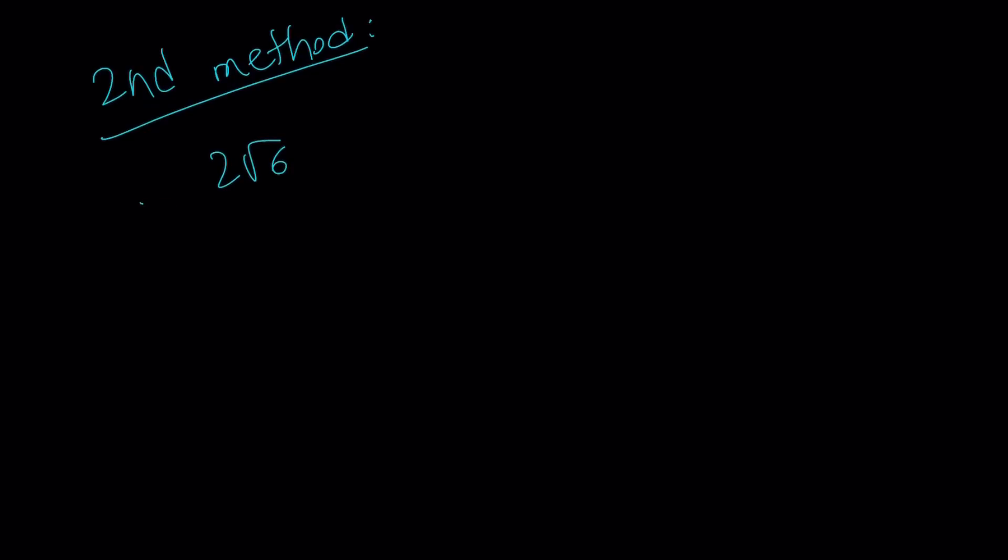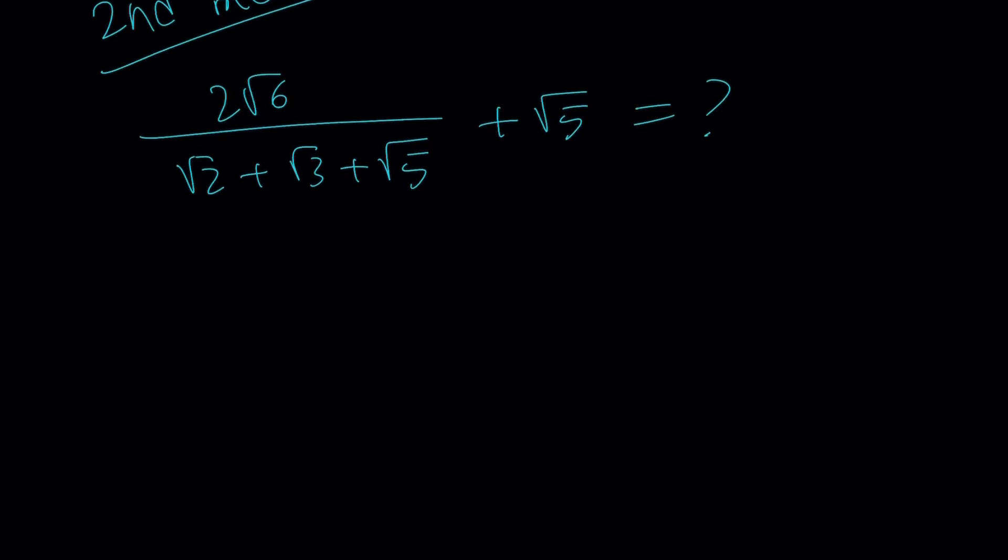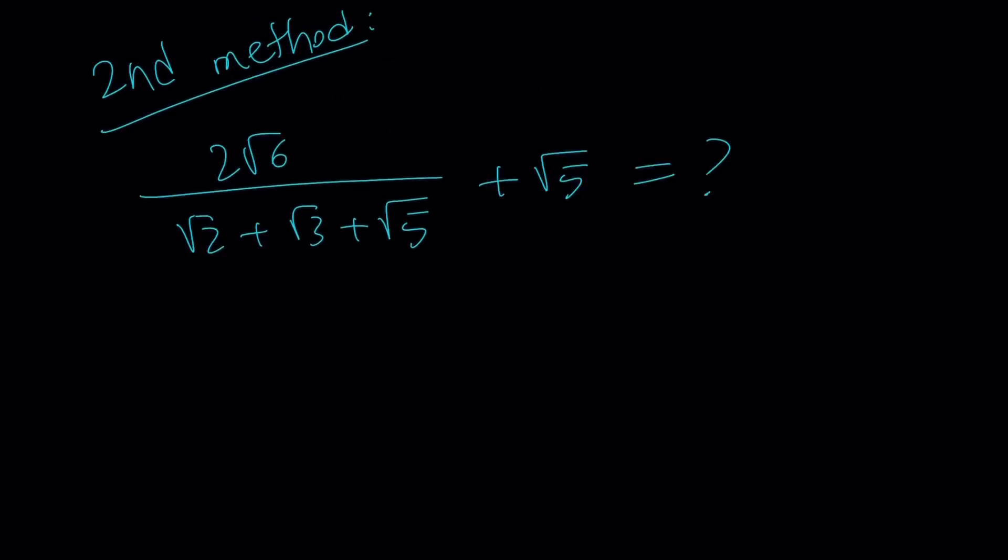So what is the original problem? Let's rewrite it. 2 root 6 divided by root 2 plus root 3 plus root 5. And then root 5 added to this. So hopefully, we're going to get the same answer. The answer was root 3 plus root 2. Let's see what happens.